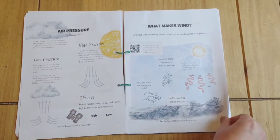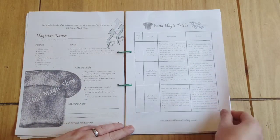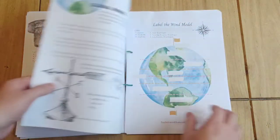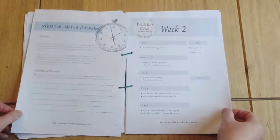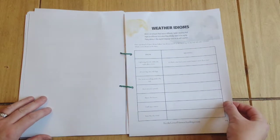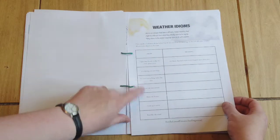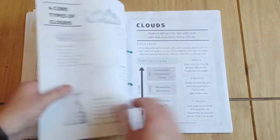They've got the water cycle, air pressure, what makes wind, wind magic tricks, a script right there, make a barometer. Weather idioms. We're looking at ones like lightning doesn't strike twice, raining cats and dogs and different weather related ones there.